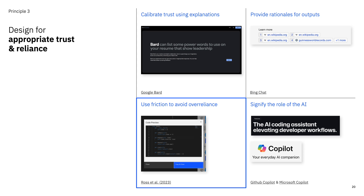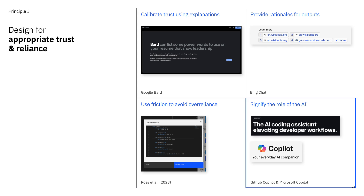Over-reliance is a huge issue with AI systems, and one strategy that can help is to add friction to the user experience. This strategy should be used with caution since friction is generally bad for user experiences, but sometimes it is important to slow users down at key decision-making points and force them to scrutinize generated outputs. One way to do this is by inserting a copy-paste barrier between a user and generated content, such as generated source code. Finally, it's really important to signify the role of the AI and how it fits into the user's workflow. GitHub and Microsoft both position their assistants as a co-pilot, signaling that the user will always remain in control.